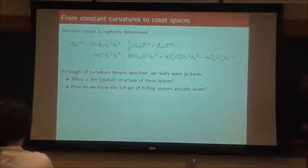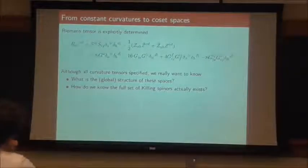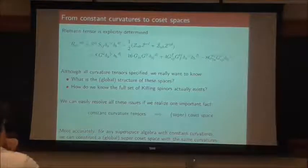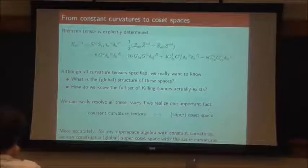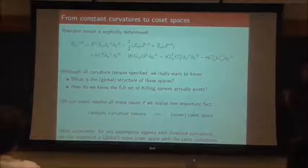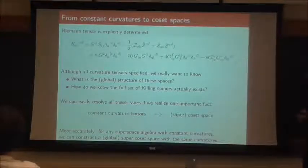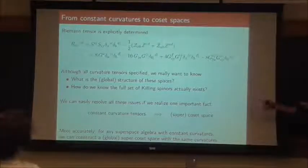But we're not quite done yet. Because you know what the Riemann tensor looks like, you still want to figure out what is the space that gives me a Riemann tensor that looks like this. I want to know the answer to questions like: what's the global structure of these spaces? And how do we actually know that the full set of Killing spinors exists? All I've imposed so far is an integrability condition. The basic idea is that because we have constant curvature tensors, we're dealing with coset spaces — in fact, supercoset spaces.